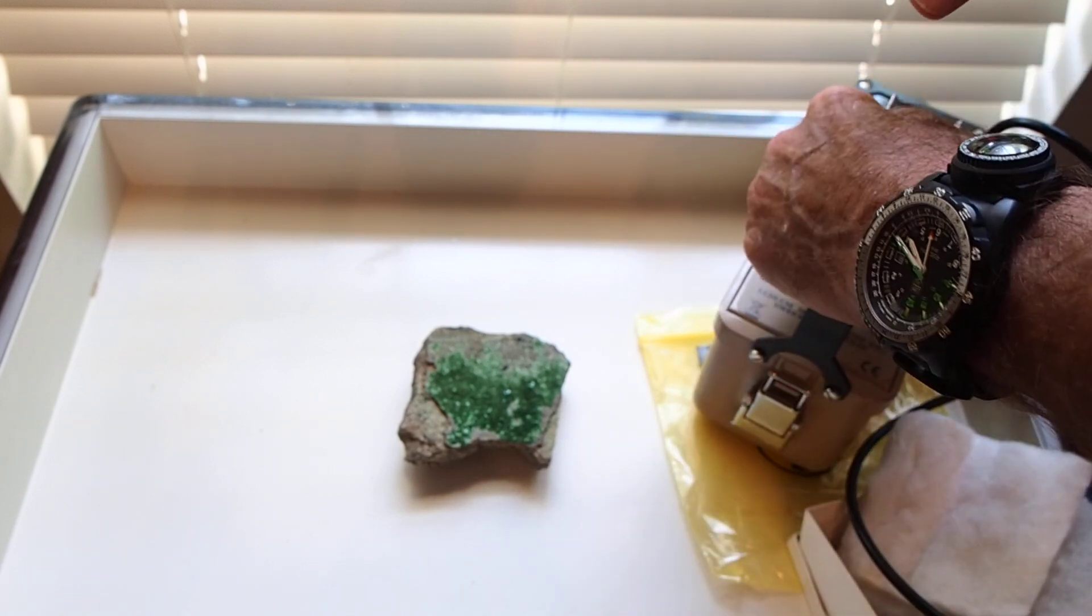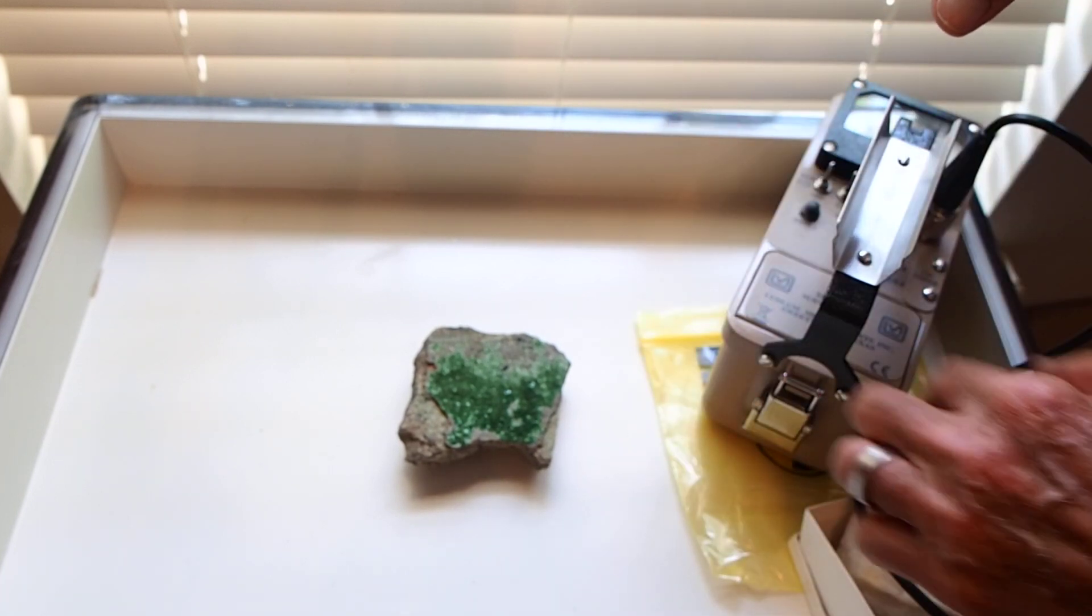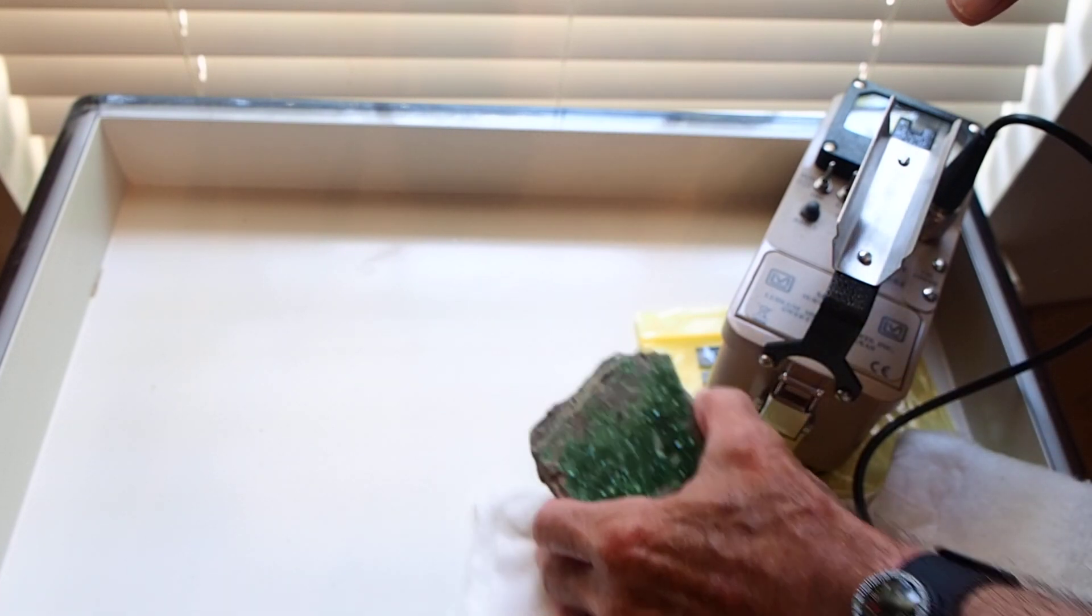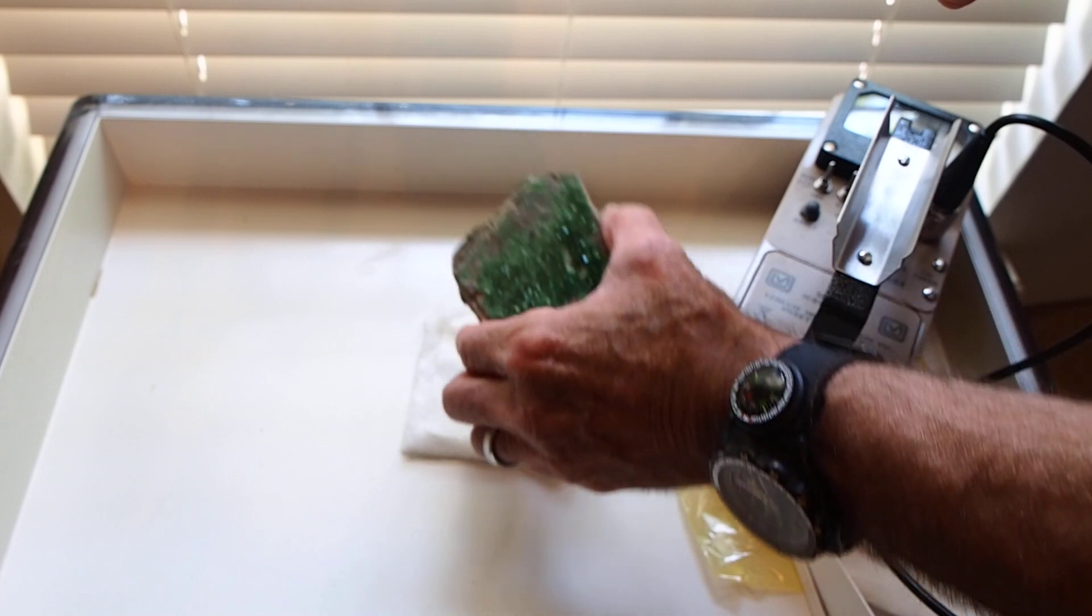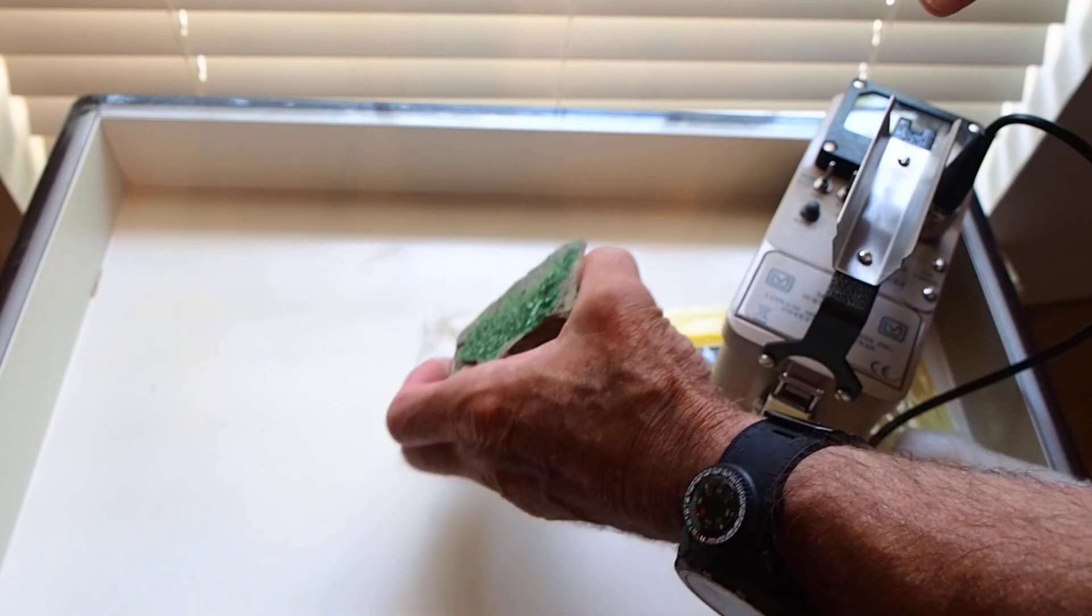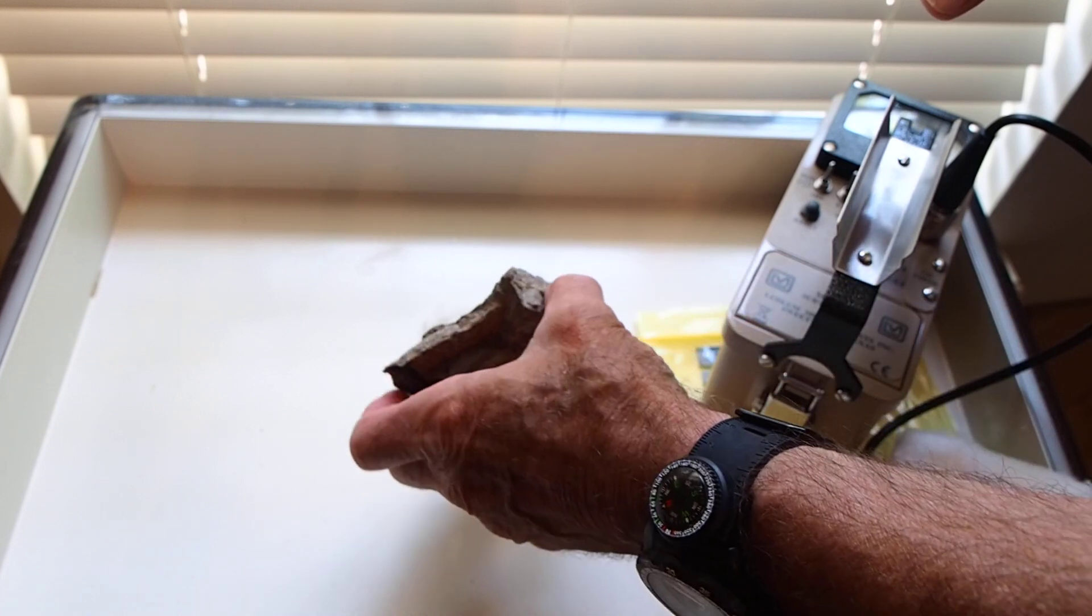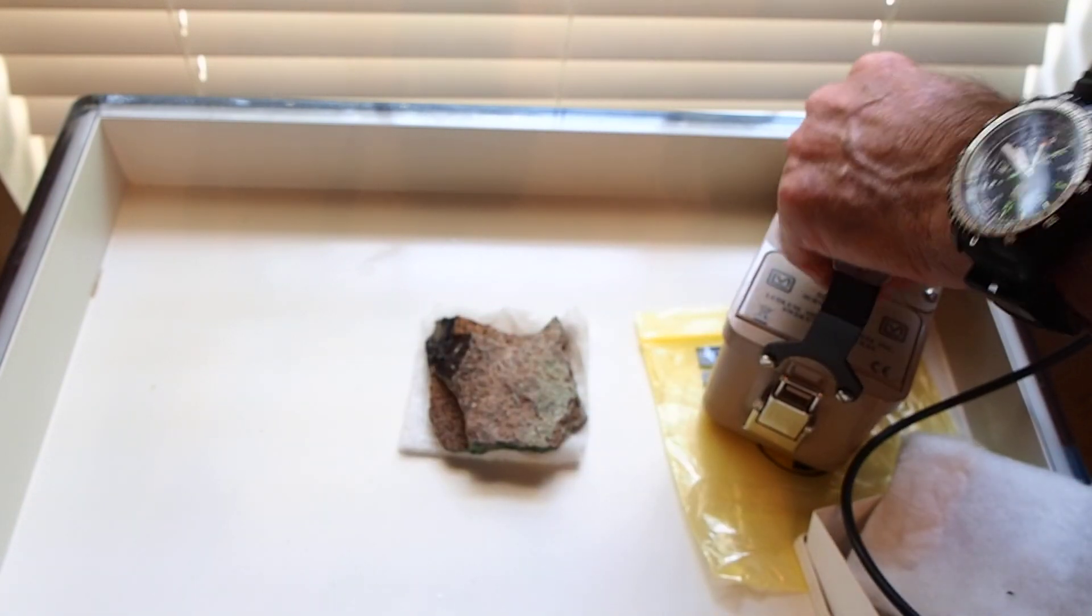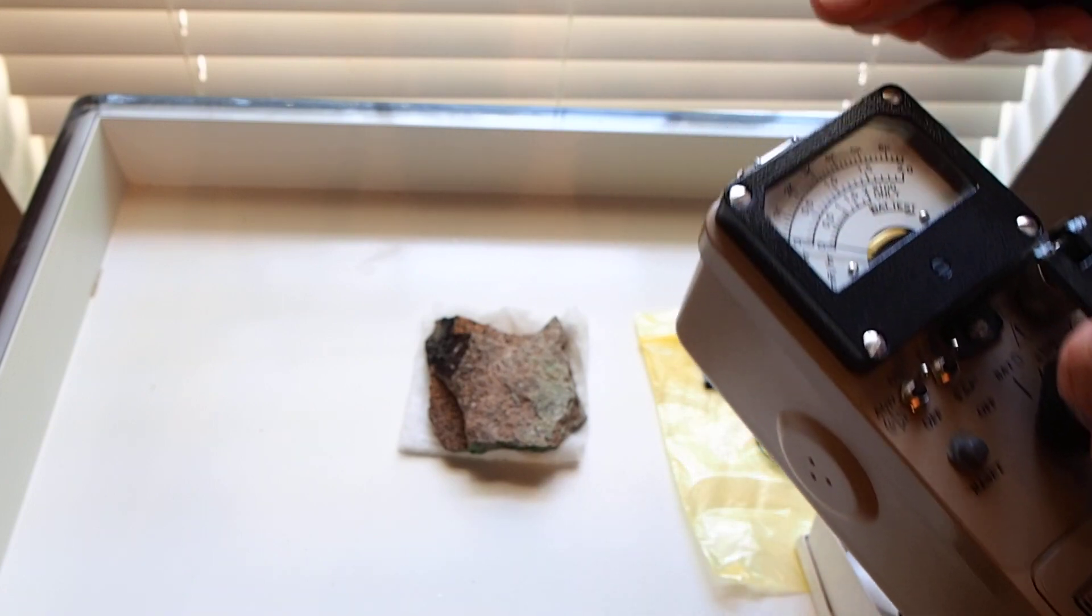Now, that's the crystalline side. If we check the back side of it, the count rate's going to be a lot less. Let's check that now. Although some of the gamma radiation from the torbonite crystals will penetrate through this rock. Okay, you already hear the count rate slowing down drastically just by turning the crystals away from us.